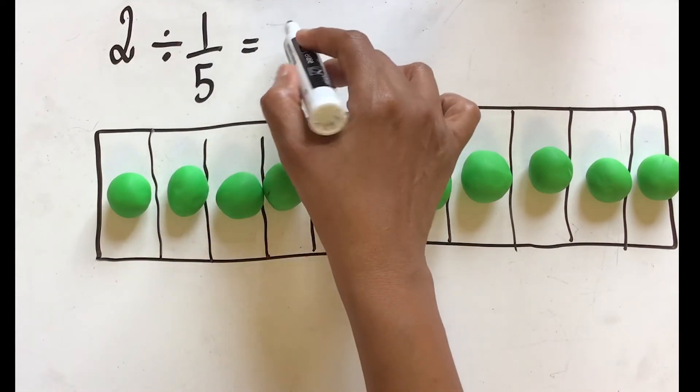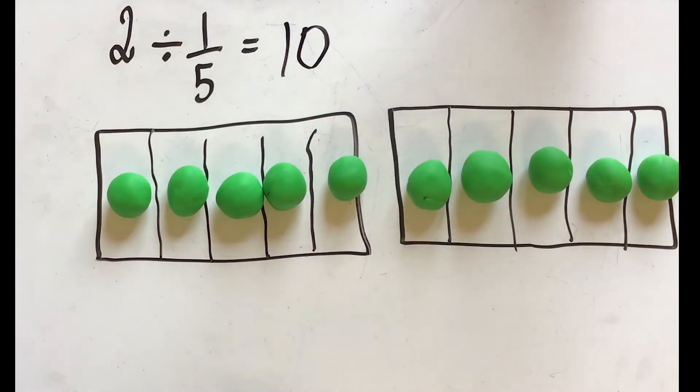So two divided into one-fifth is equal to ten. Think about this.